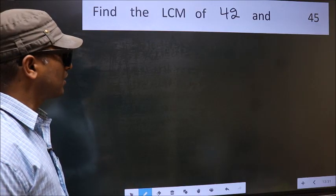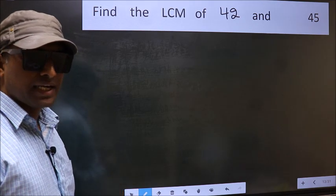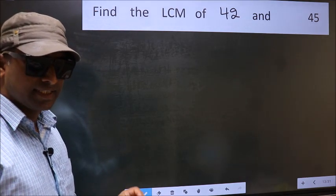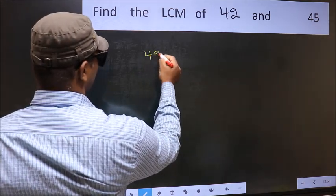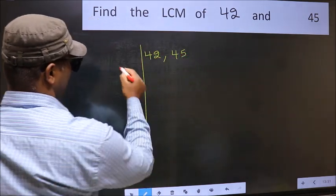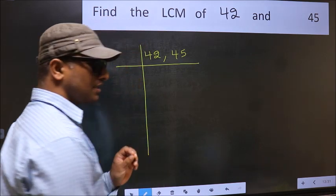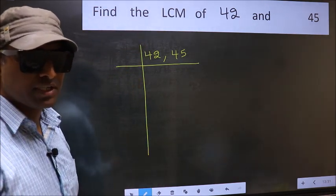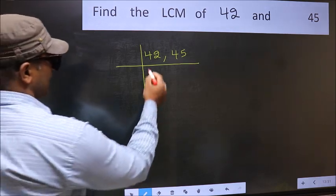Find the LCM of 42 and 45. To find the LCM, we should frame it in this way: 42 comma 45. This is your step one. Now you should focus on the first number, which is 42.